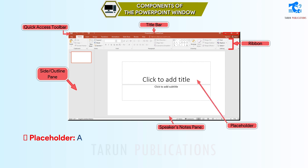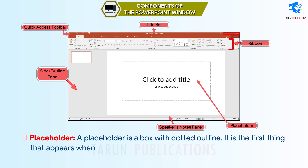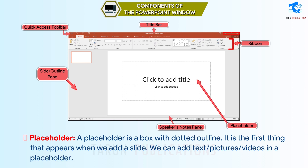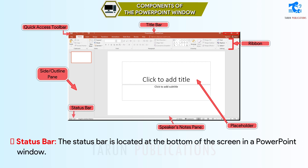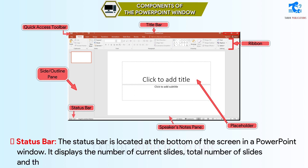Placeholder: A placeholder is a box with a dotted outline. It is the first thing that appears when we add a slide. We can add text, pictures, and videos in a placeholder. Status Bar: The status bar is located at the bottom of the screen in a PowerPoint window. It displays the number of the current slide, the total number of slides, and the design theme that was used.